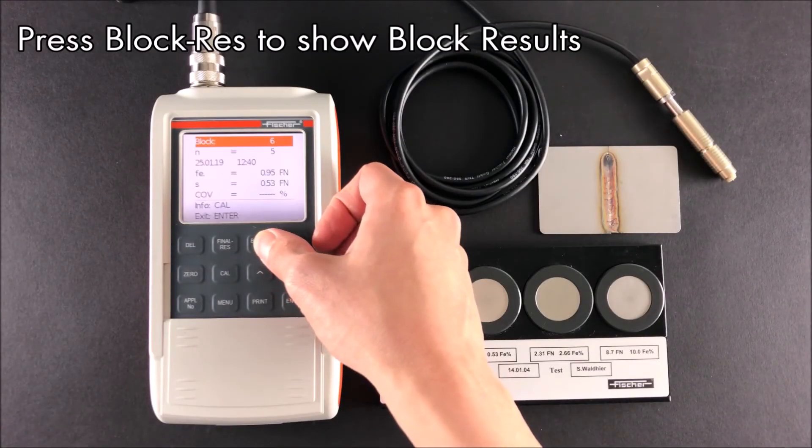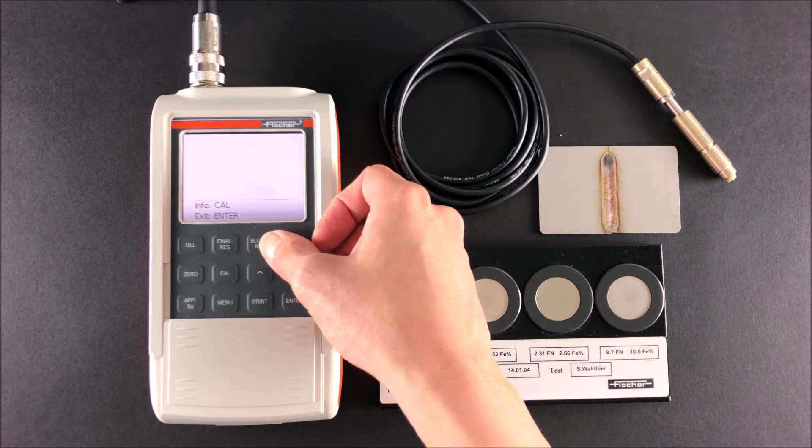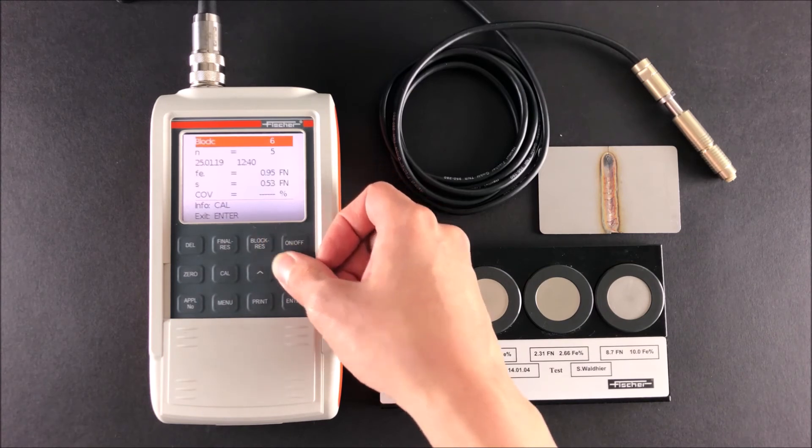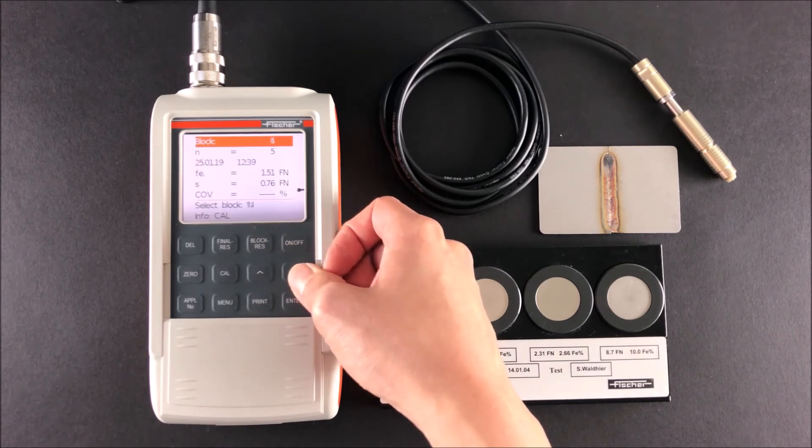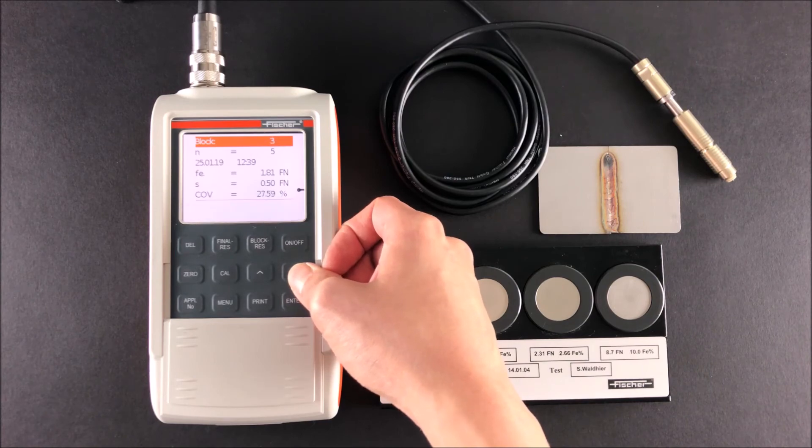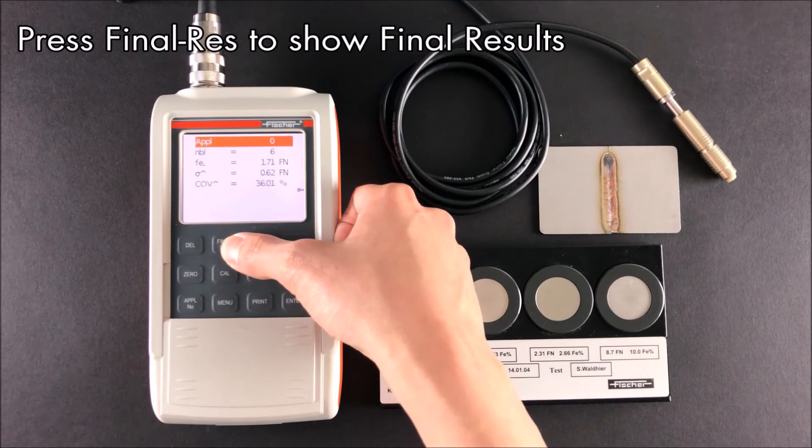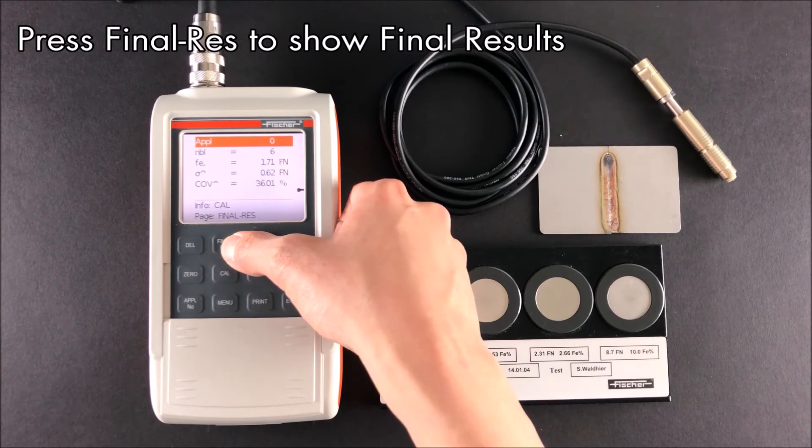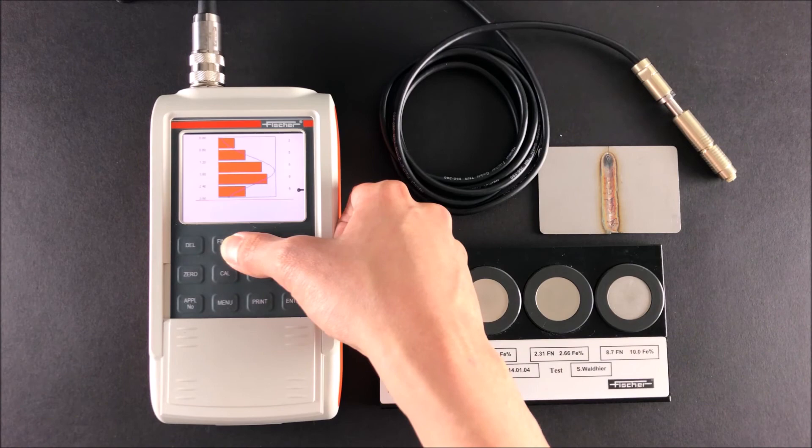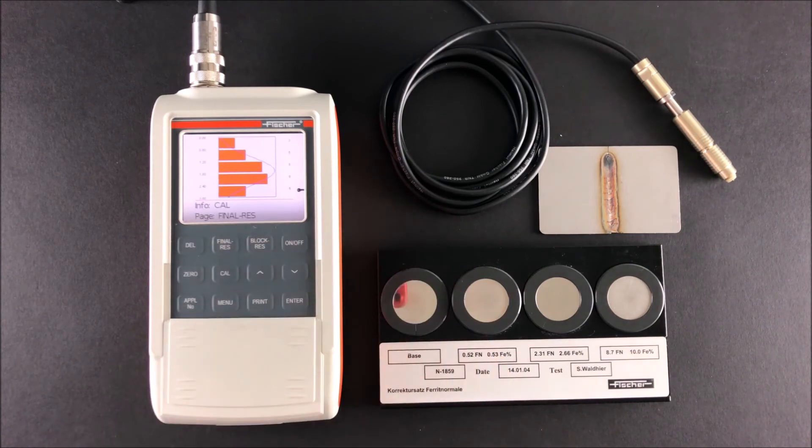Finally, blocked results and final results can be viewed on the FerritScope instrument. The FerritScope is fully compatible with the Fischer Data Center, which is used to create reports. It works in the same way as shown in the FMP tutorial video series part 3. The link is given in the description below.